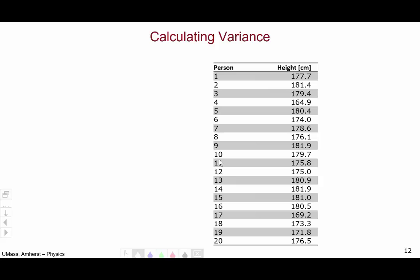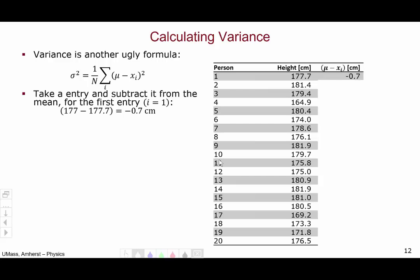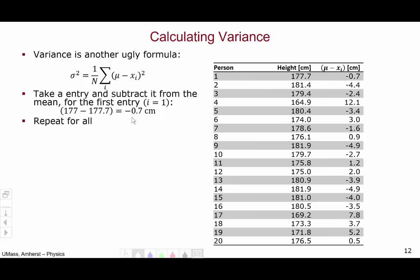Let's calculate the variance for these data. Again, variance is kind of an ugly formula, so you really got to slow down and take it one piece at a time. So, let's take an entry, i equals 1, and what do we do? Take the entry and subtract it from the mean. This, for i equals 1, is negative 0.7 centimeters. When we repeat this for all of our data, we get these results.